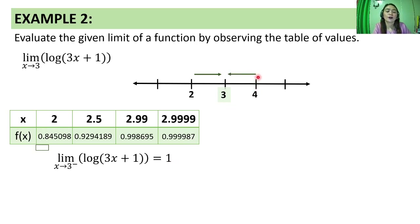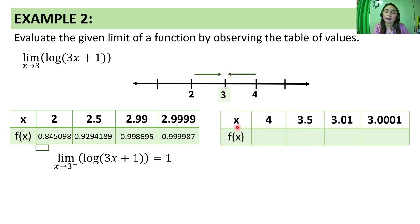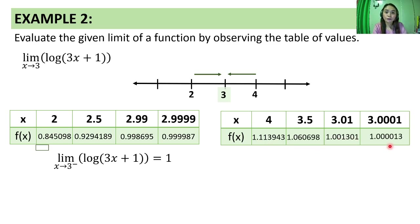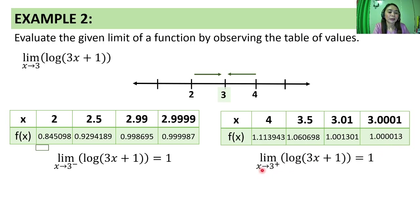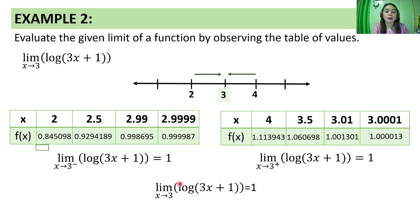From the right side, we take x values approaching 3: 4, 3.5, 3.01, 3.0001. We substitute these into the function and compute the corresponding values. Habang lumalapit yung x value sa 3 from the right, the f of x values also approach 1. Hence, the limit of the logarithm of 3x plus 1 with base 10 as x approaches 3 from the right is equal to 1. Since both one-sided limits are equal, the limit exists and the limit as x approaches 3 is equal to 1.